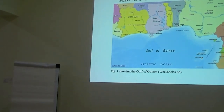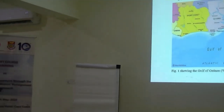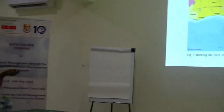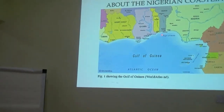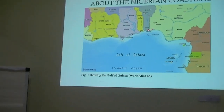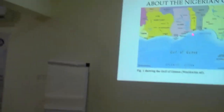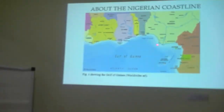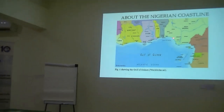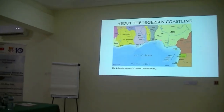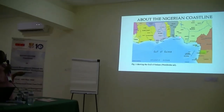I'll give you some background information. The Nigerian coast is about 850 kilometers, and it's mainly a beach or sandy beach coastline. However, around the Ondo area where we study, it's a muddy coast.